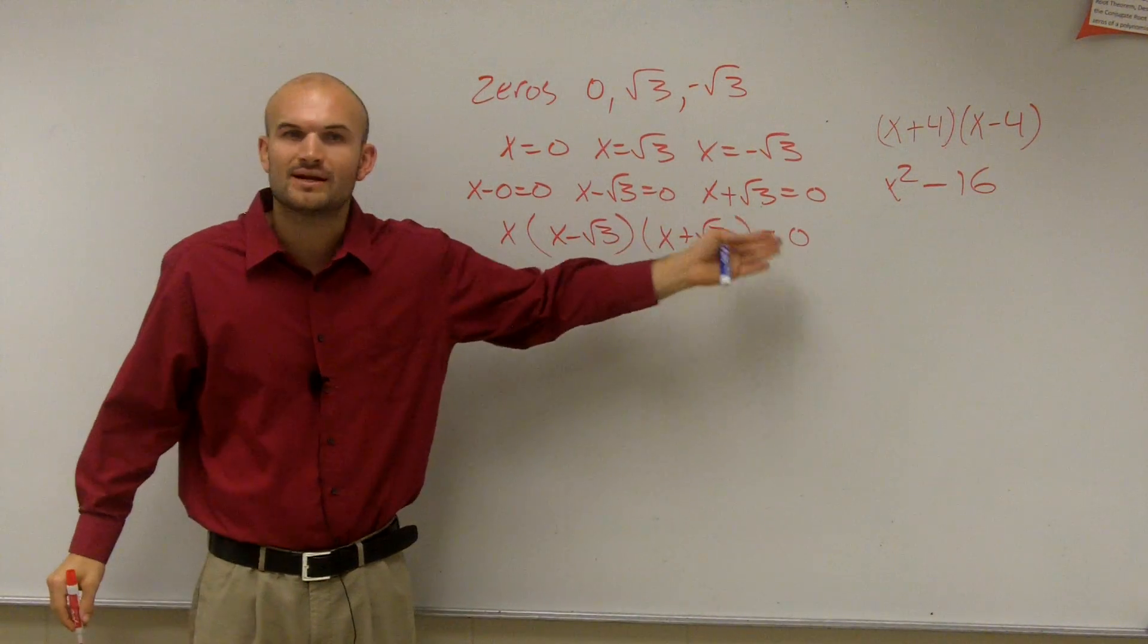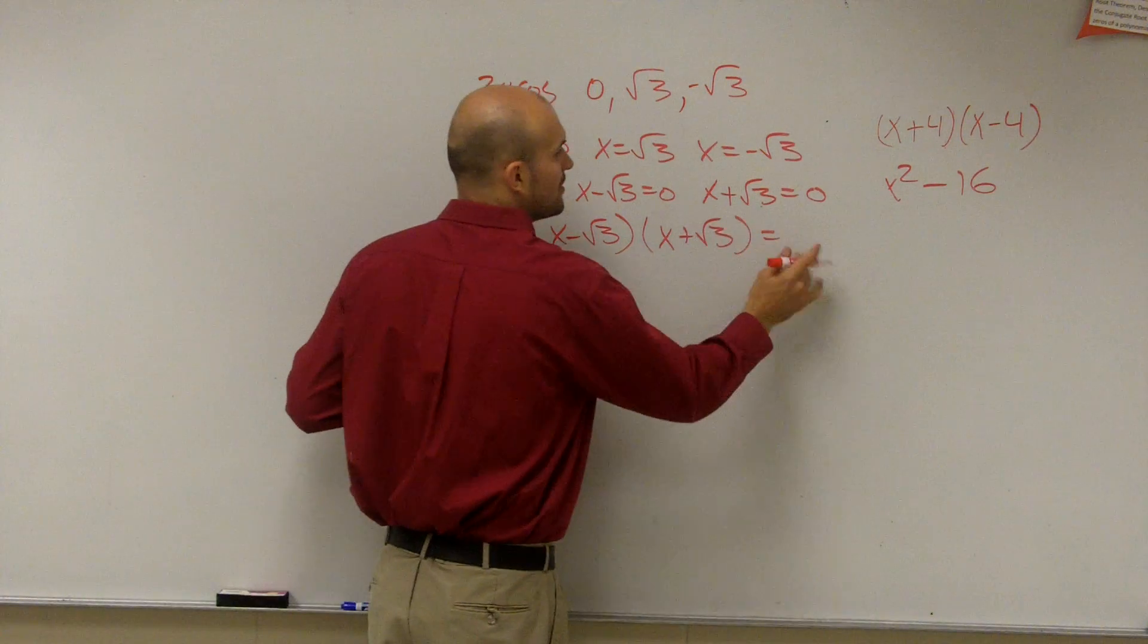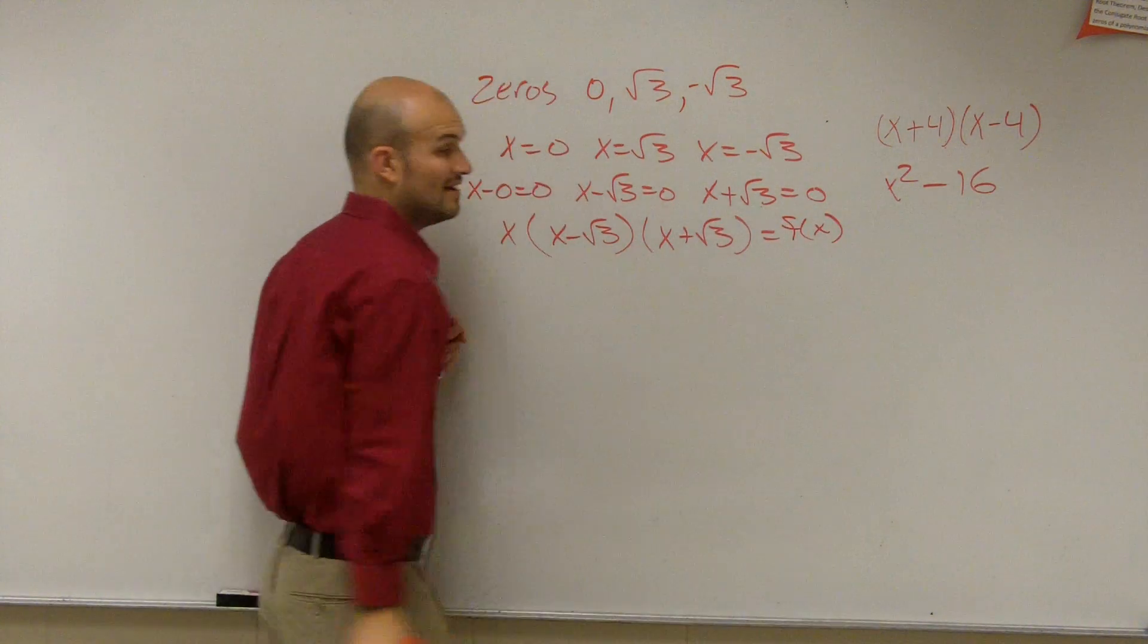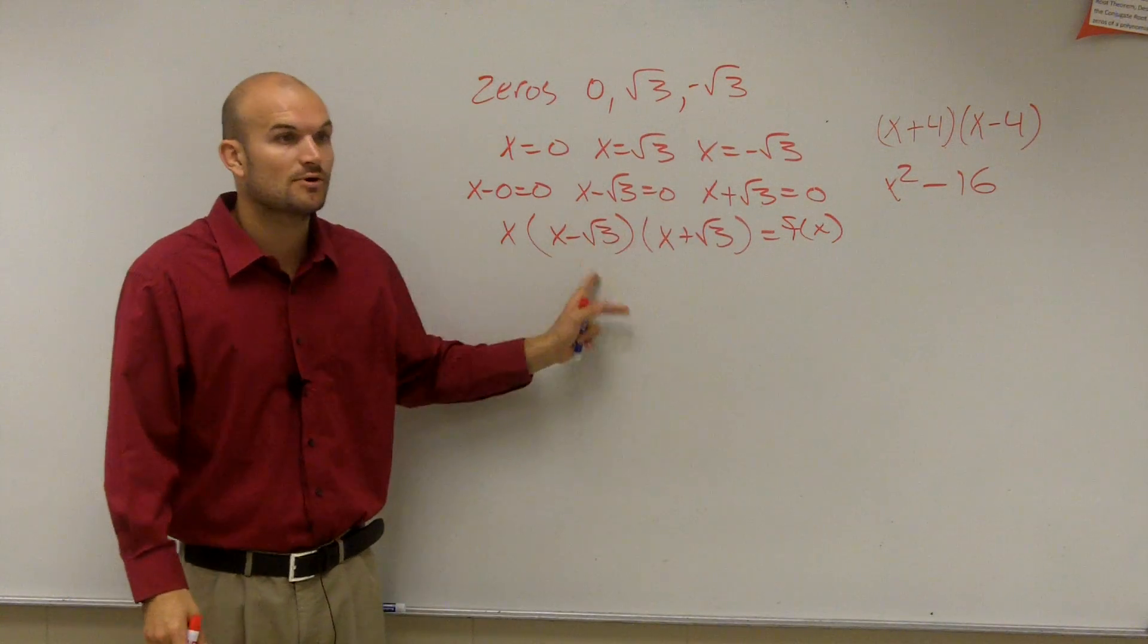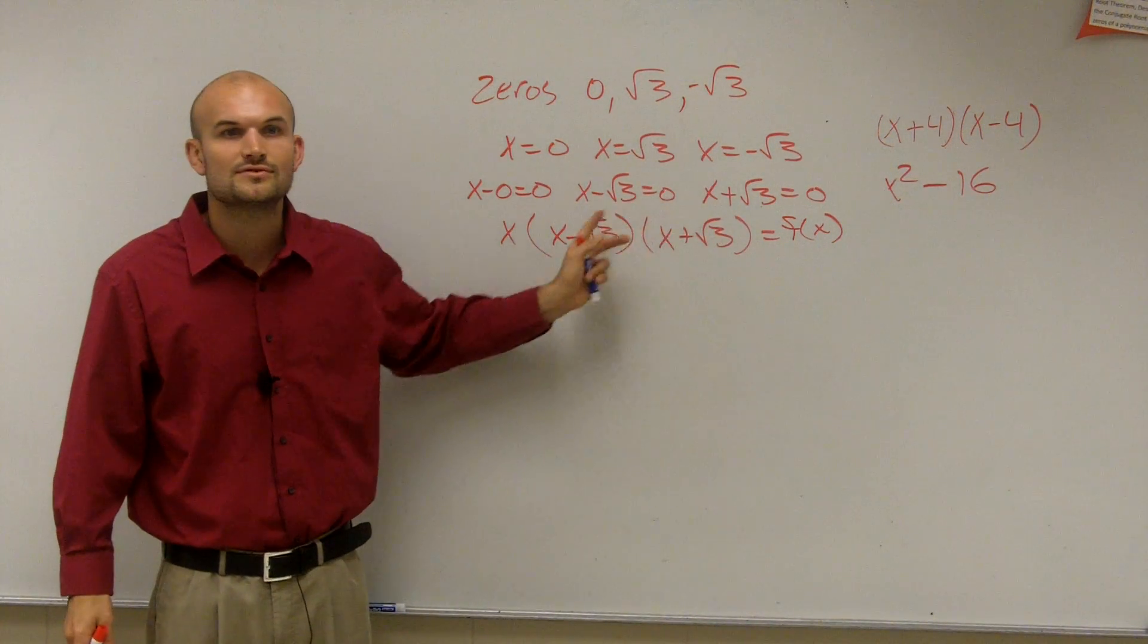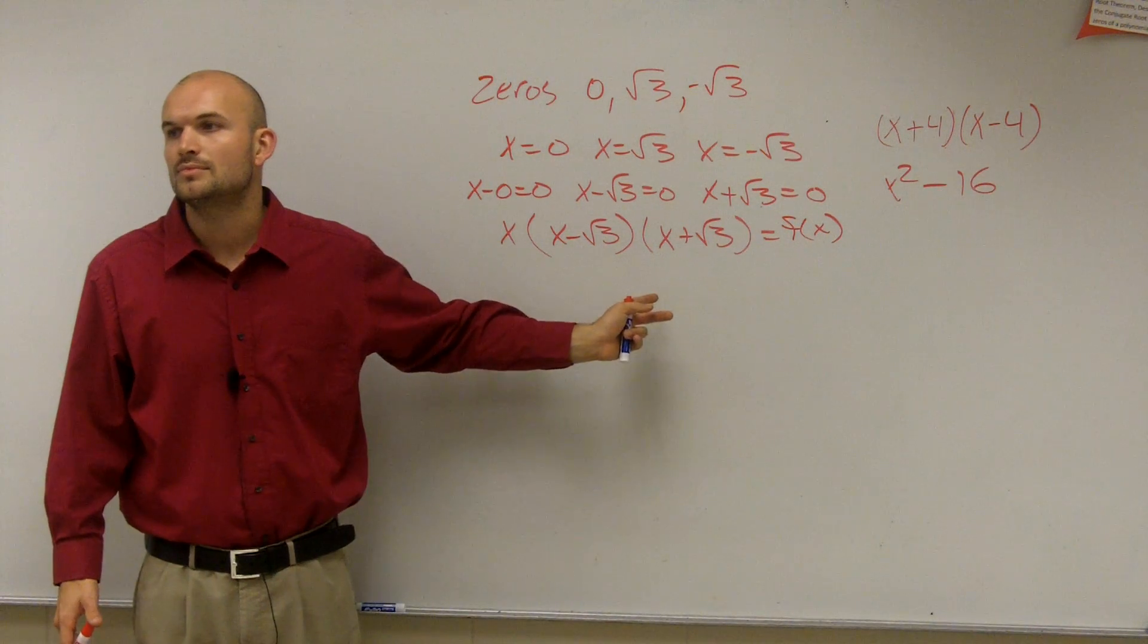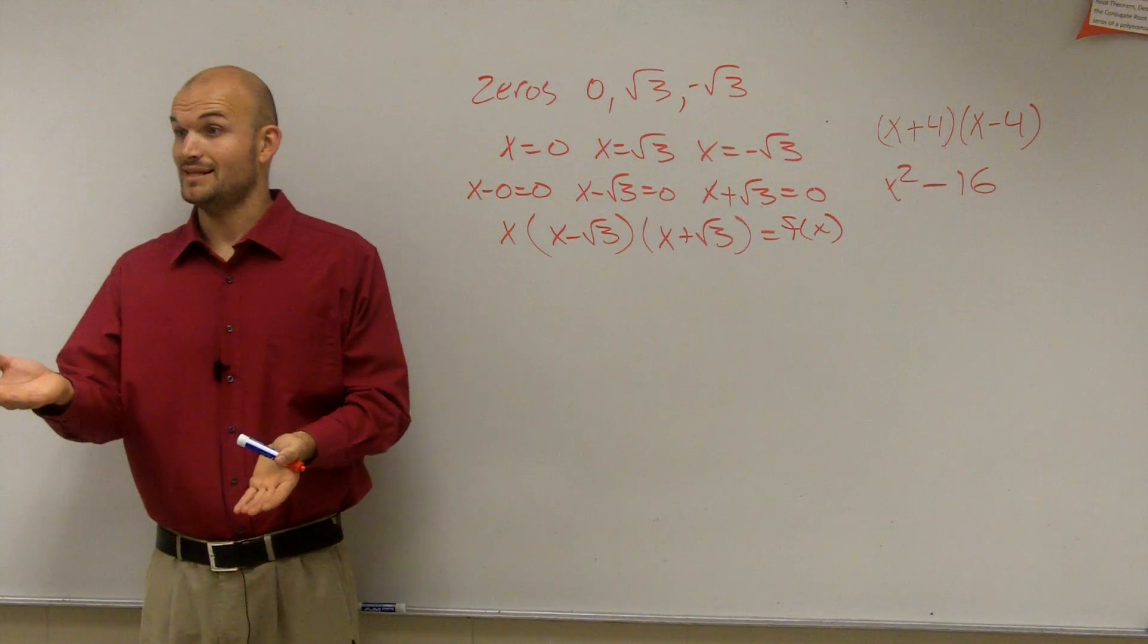But again, we don't want to solve for 0. We want to actually figure out these multiplied equals f of x. So now, we just need to multiply. Here is what we call a difference of two squares.